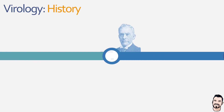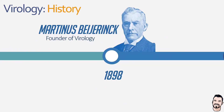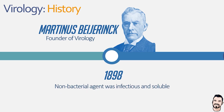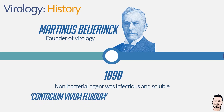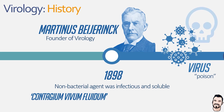A few years later, Martinus Beijerinck continued Meyer's and Ivanovsky's work, concluding that the agent causing the tobacco plants to become mottled was not a bacterium, as it was too small to be seen under a microscope and could pass through the finest of filters. This suggested that the liquid itself was infectious, which he called contagium vivum fluidum, meaning 'contagious living fluid' — which is partially correct. He then went on to term this infectious agent a virus, which means poison in Latin, and from this he is widely credited as being the founder of virology.